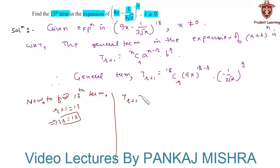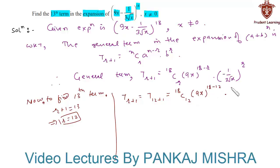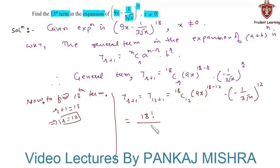On substituting r equal to 12 in the expression for the general term, we have T(12+1) equal to 18 C 12 into (9x) whole raise to (18 minus 12) into (minus 1 upon 3 root x) whole raise to 12. Now 18 C 12 can be written as 18 factorial upon 6 factorial into 12 factorial.